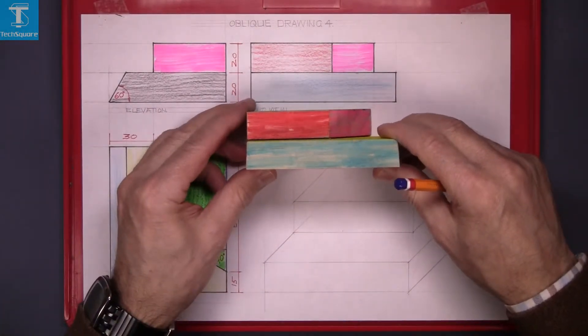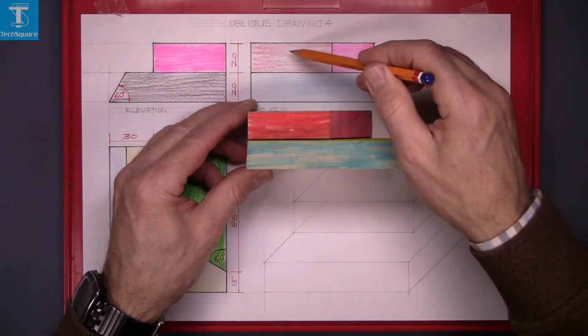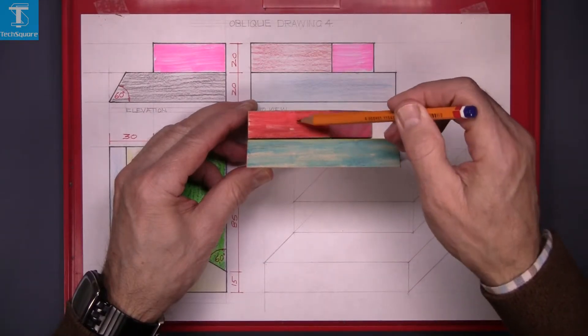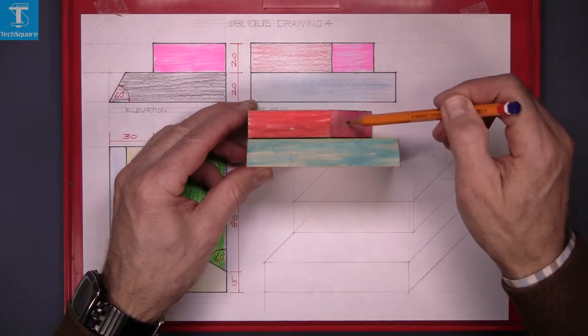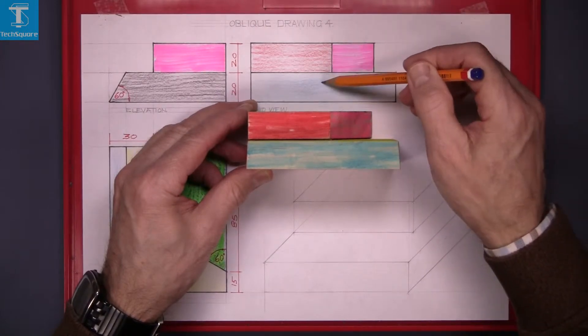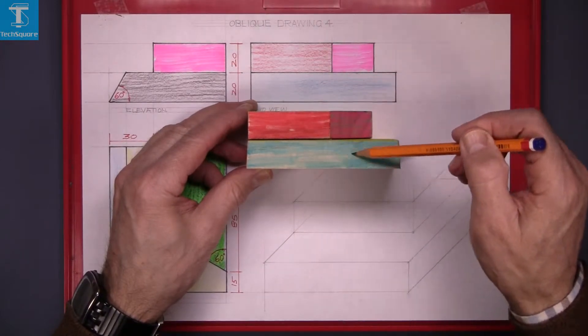In the end view you have the red surface represents this one, the pink this end, and the blue the front of the bottom piece.